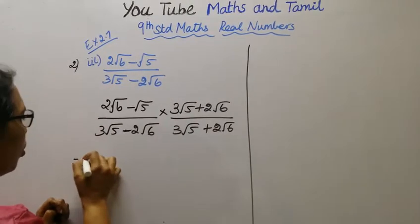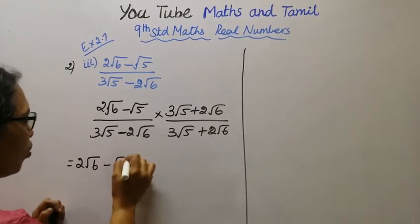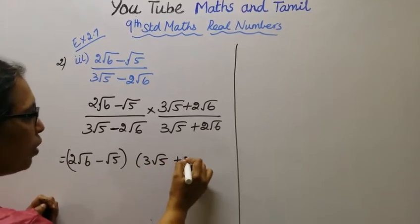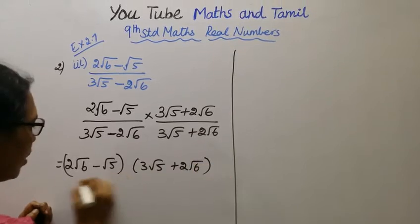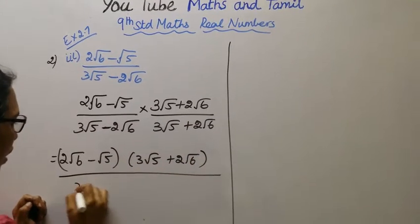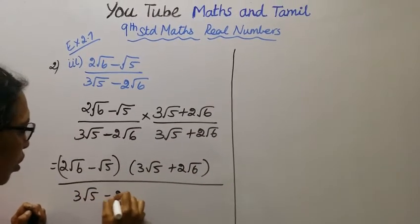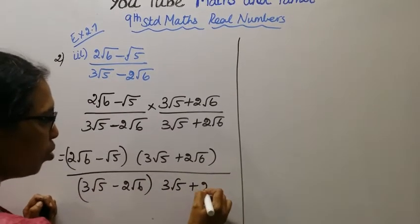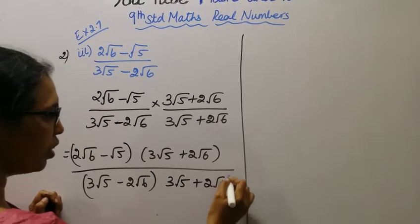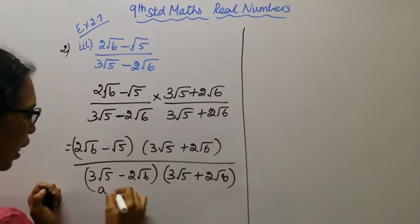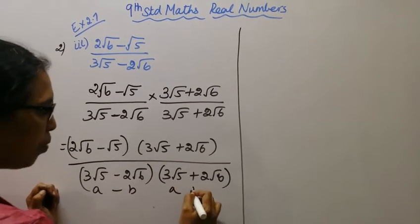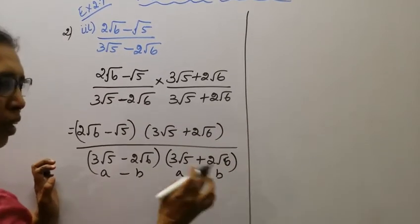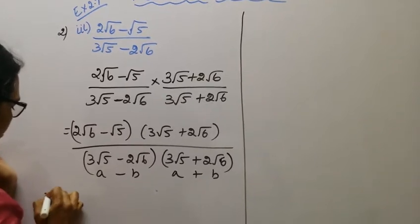So we have 2 root 6 minus root 5, times 3 root 5 plus 2 root 6, divided by 3 root 5 minus 2 root 6, times 3 root 5 plus 2 root 6. The denominator is in the form (a minus b)(a plus b), so we use the identity a squared minus b squared.